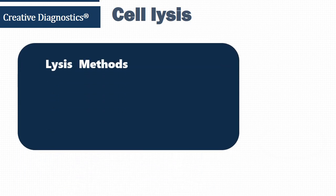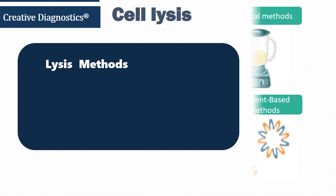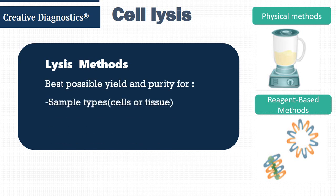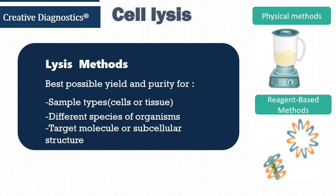Cell lysis is crucial to protein extraction. Generally, there are mainly two types of lysis methods: physical methods and reagent-based methods. Which method is chosen depends on sample types, different species of organisms, and the target molecule or subcellular structure.